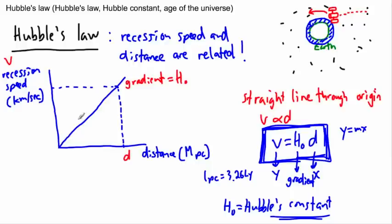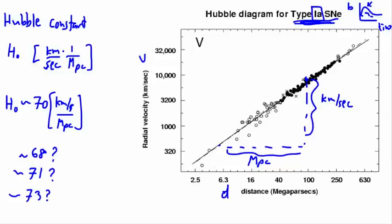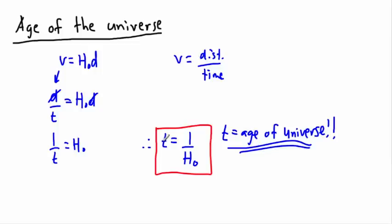Assuming all this holds true, we have to assume this is linear, a straight line. If we can find the gradient of this, then we can find the age of the universe. I think that is so awesome.